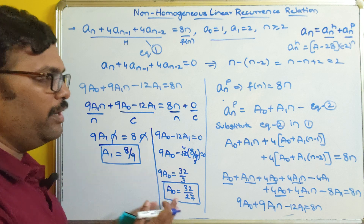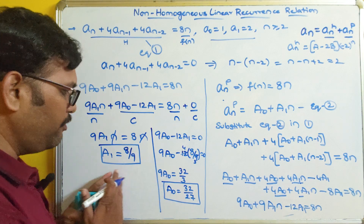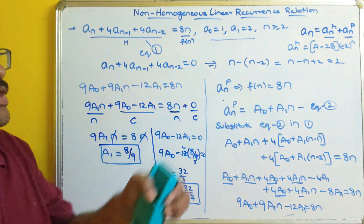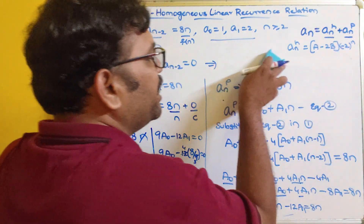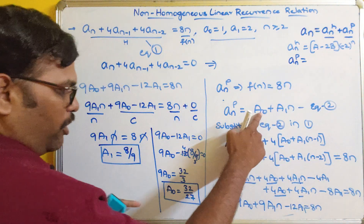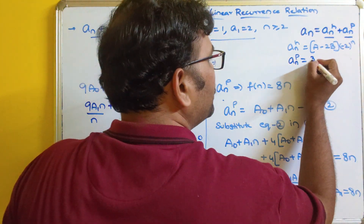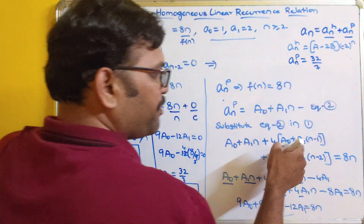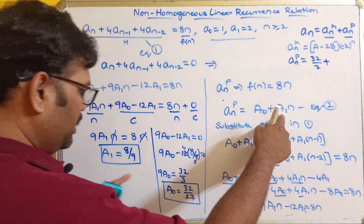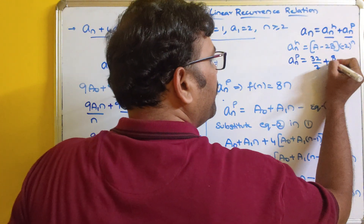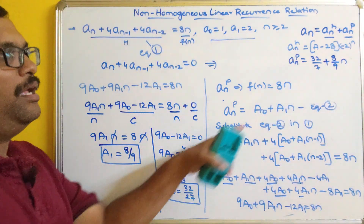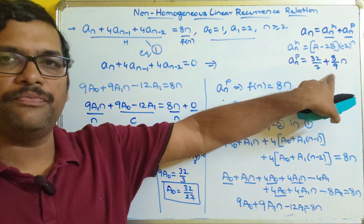We got a₁ = 8/9 and a₀ = 32/27. Applying these into the equation for a_np: a_np = 32/27 + (8/9)·n. This is the general solution for the particular (function) part.